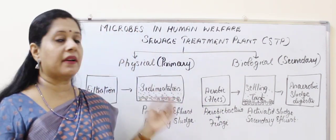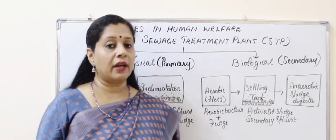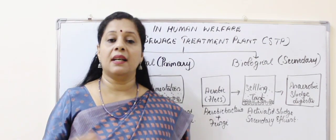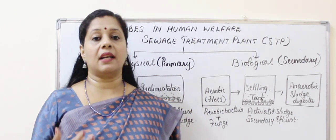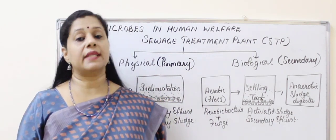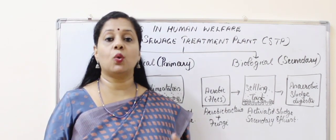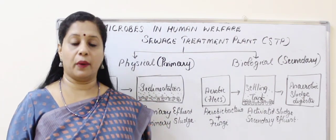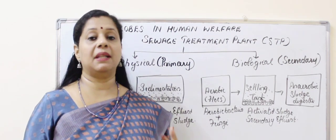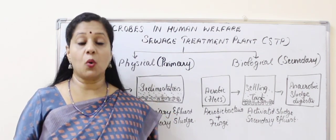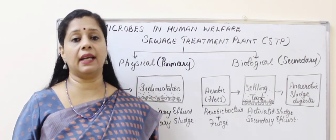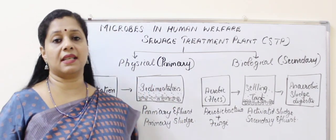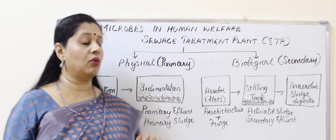Starting with the physical treatment — the primary treatment. The sewage treatment plant collects wastewater from all nearby houses and other organizations, schools, etc., and passes it through a filtration process. It is a physical filtration where any floating debris — waste, pieces of papers, old clothes, racks, or any other floating things — will be filtered out. Only the water with some amount of waste goes inside. So big floating debris is removed in the first stage filtration.